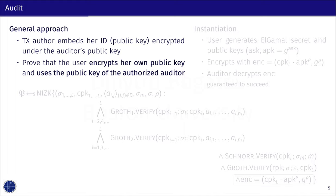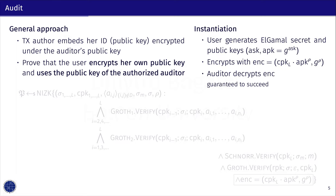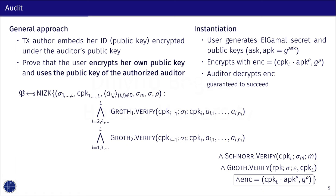The second extension is auditing. A natural approach for auditing is to encrypt the real user ID and include it with the transaction. What makes it interesting is that one needs to prove that the encrypted value is the correct key and that the encryption is valid under the auditor's key — all of that in the presence of anonymous credentials. The way we instantiate this is using ElGamal encryption. We encrypt the public key and generate a proof that validates that the encrypted key is the same as in the credentials, that the encryption key is the same as the auditor's, and that the encryption itself is valid. On top of earlier components, we also prove the facts about the auditing encryption.